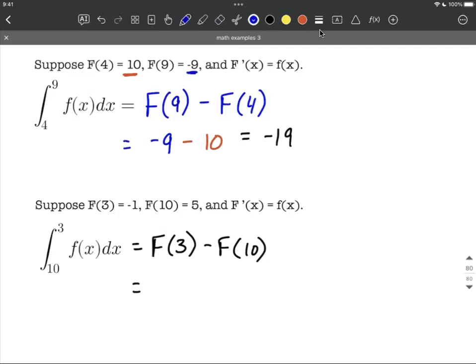Then we just fill it in with the right-hand side. So big F of 3 equals negative 1, minus big F of 10 equals 5. So negative 1 minus 5 works out to be negative 6, and that's our overall answer.